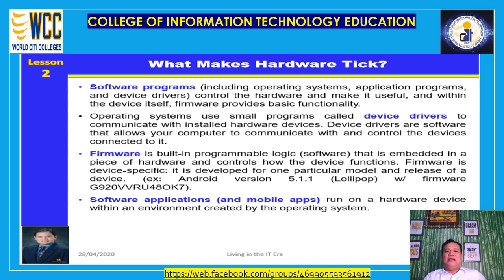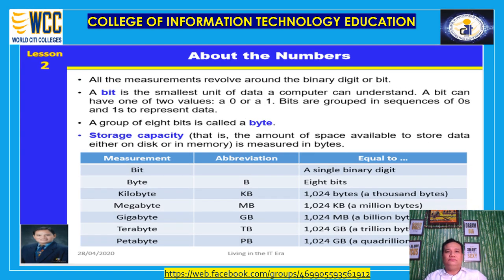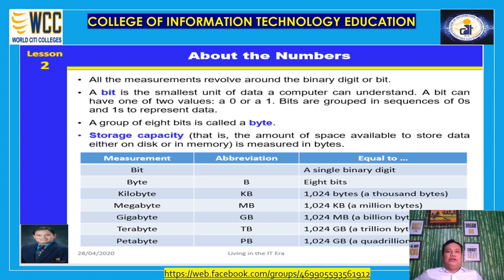Software applications and mobile apps run on a hardware device within an environment created by the operating system — this environment is called a platform. The platform is an interface between the application and the operating system, and is what makes it possible for apps to run on a device. Think of a platform as a foundation: the operating system, device drivers, and firmware work together to control the basic functionality of the hardware. An application sits on top of this foundation and performs its own special functions, then sends specific requests to the operating system to ensure the necessary hardware tasks are performed.